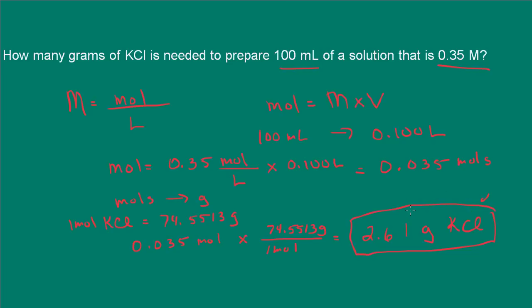So this means that we would need 2.61 grams of KCl to prepare 100 milliliters of a solution that is 0.35 molar. Anyway, I hope this helps, and we'll see you next time.